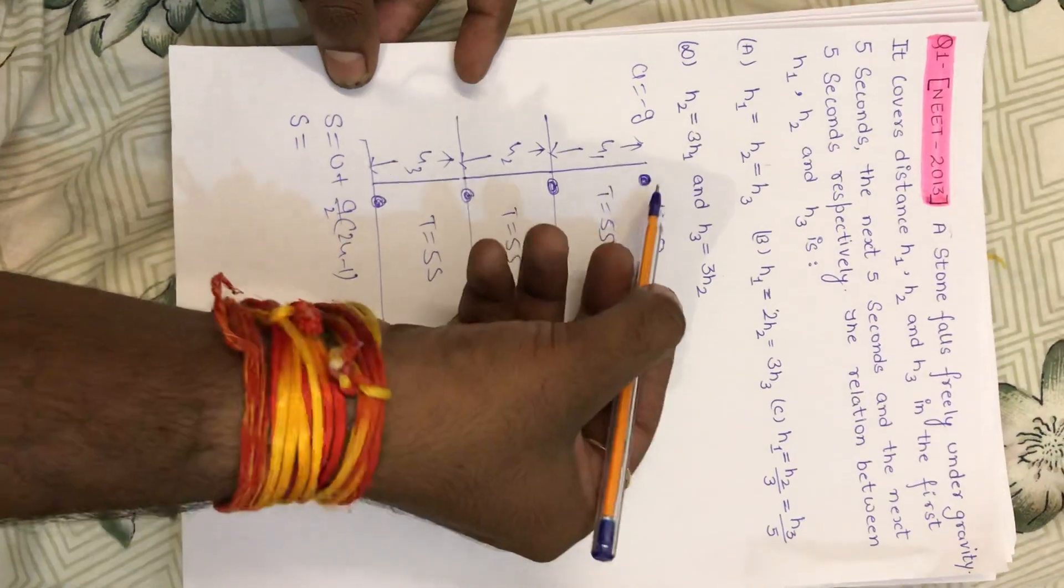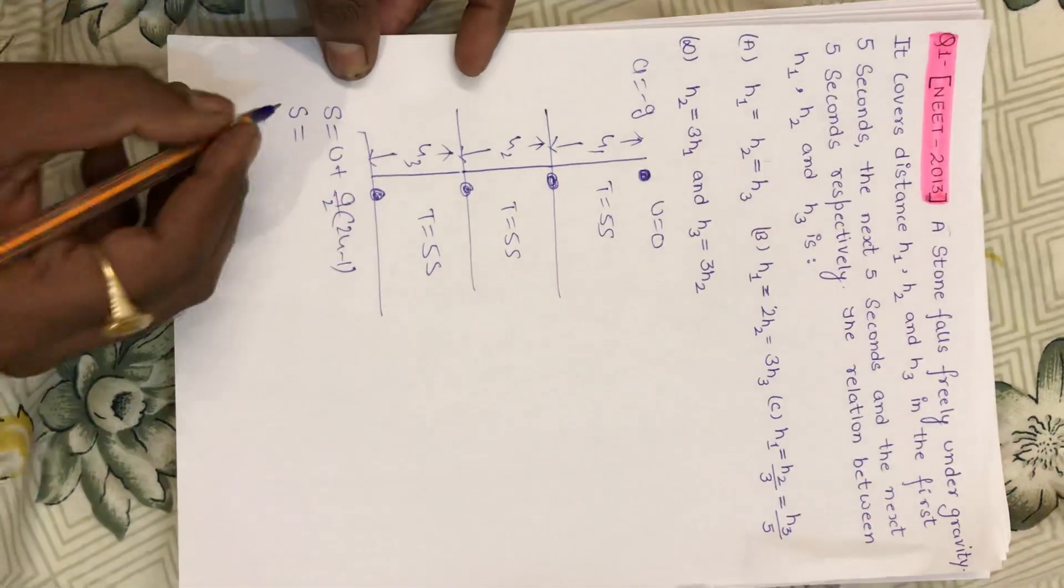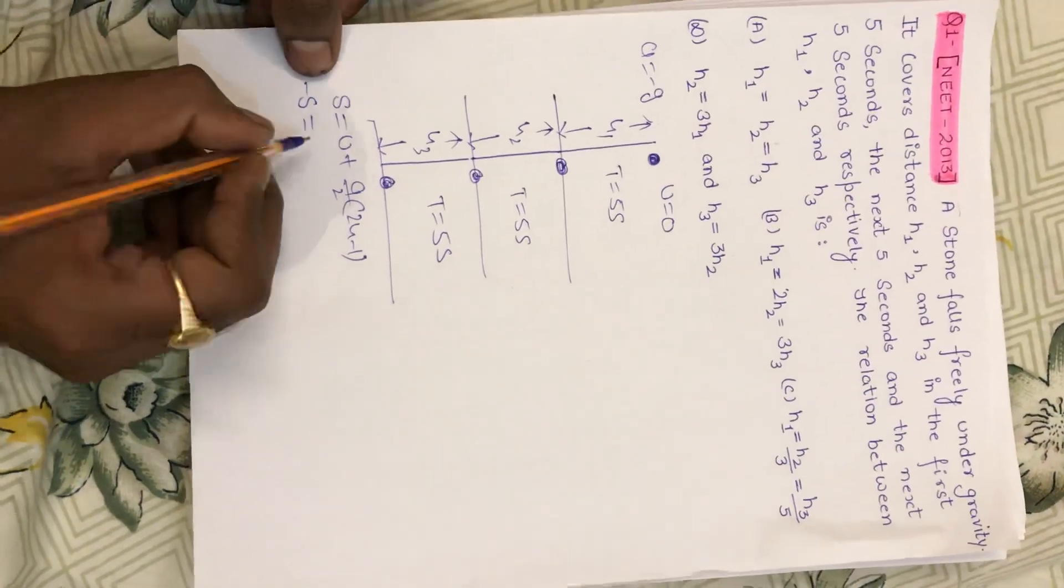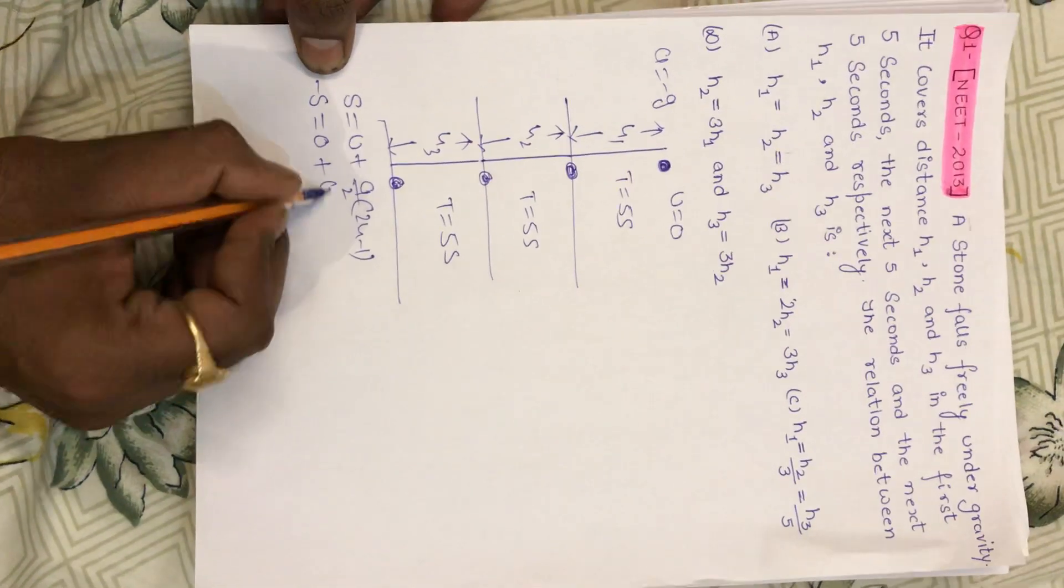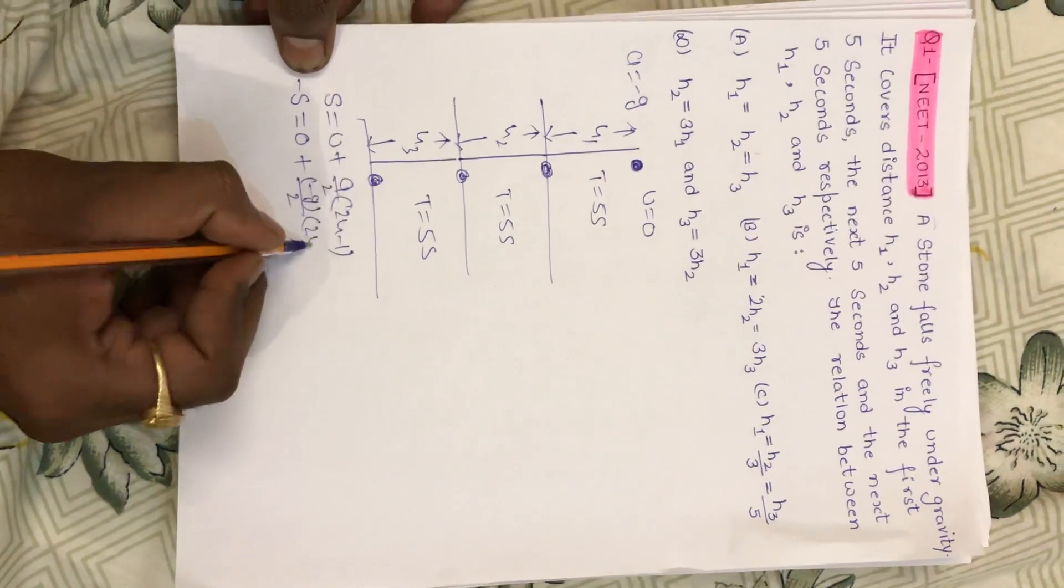If you see, the ball is coming down, the height is less. So the displacement will be minus. Initially, body rest will be 0 and the gravity will be minus g by 2, t squared minus 1.